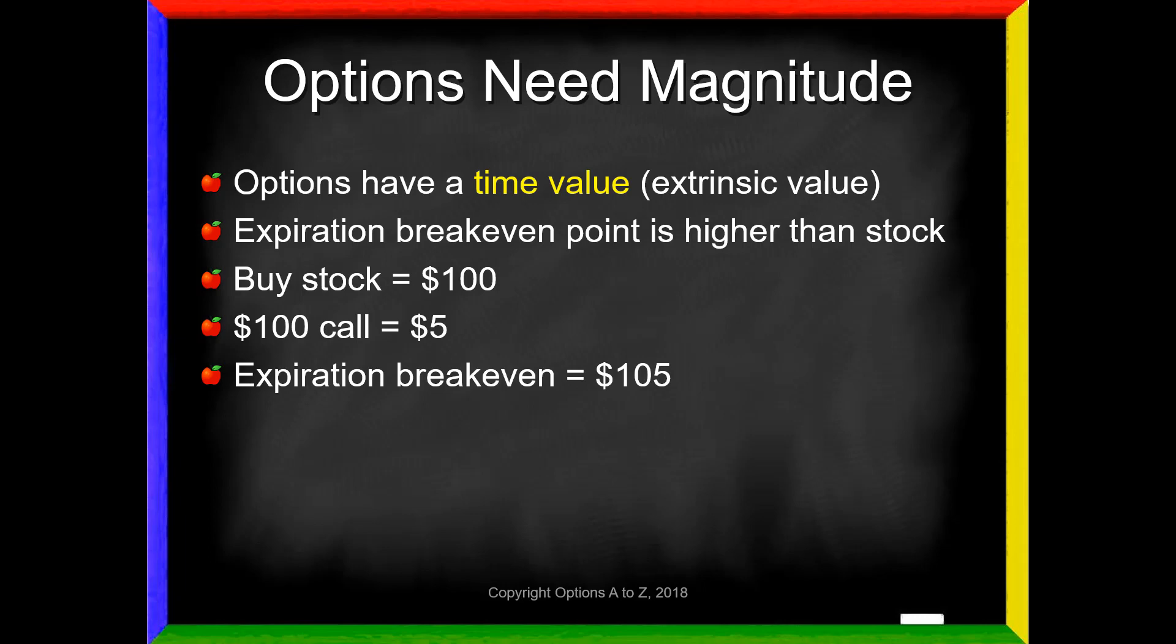And see, as a stock trader, you don't have a time value. So you start profiting right away. And because of this time value, it creates a magnitude dimension. And by that, I just mean that there is a size or a distance. It's not just about direction. It's got to be by a certain amount in order to be profitable.